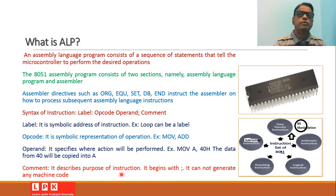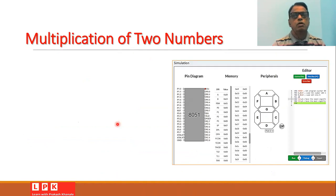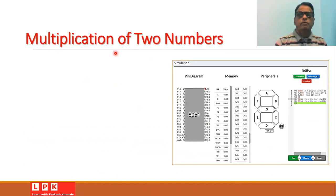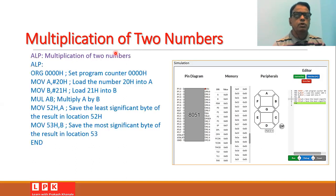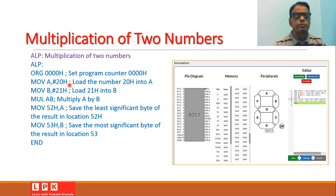Now let's discuss the first problem: multiplication of two numbers. Suppose we have two hexadecimal numbers and want to multiply them. Initially we set the program counter to 0000h using ORG 0000h, then load the first number 20h into the accumulator using MOV A, #20h, and load the second number 21h into register B. For multiplication there is the instruction MUL AB.